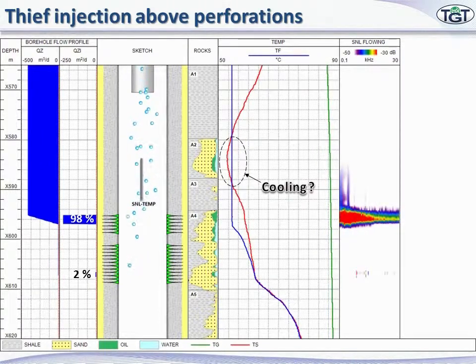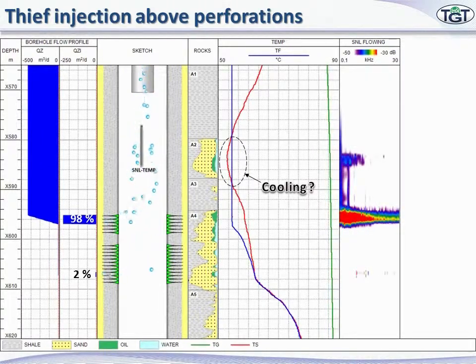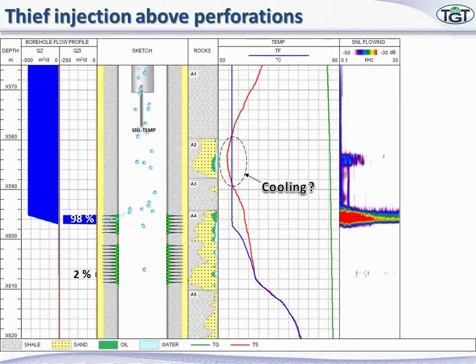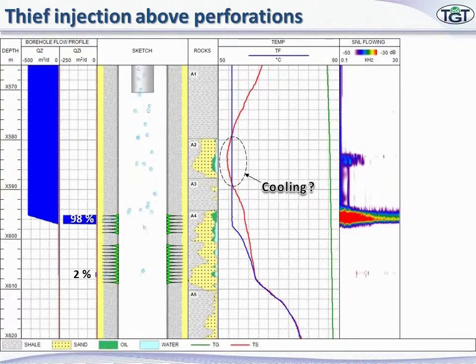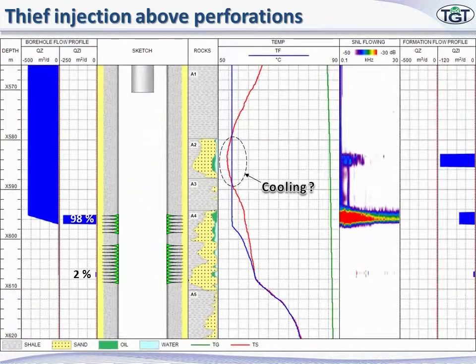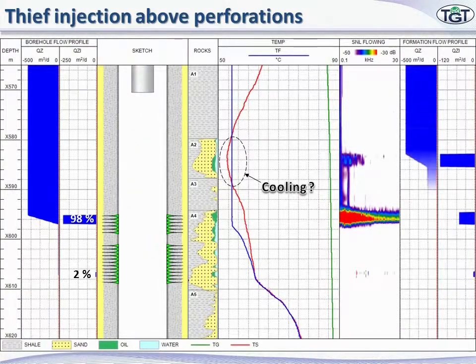We find that across the cooling effect in A2, there is a very prominent noise. According to the flow scenario suggested by the temperature modeling and noise analysis, we are injecting less in A4 formation and more in A2 by channeling flow.